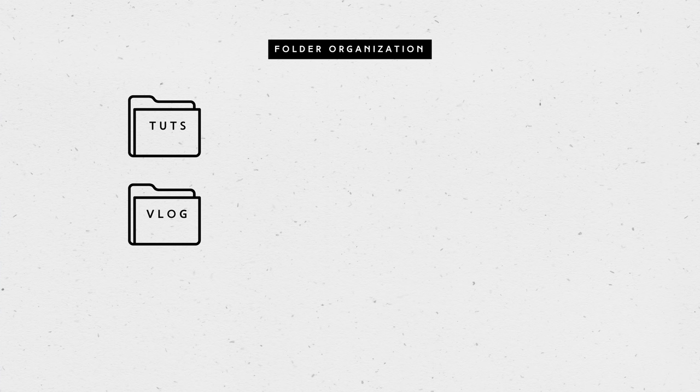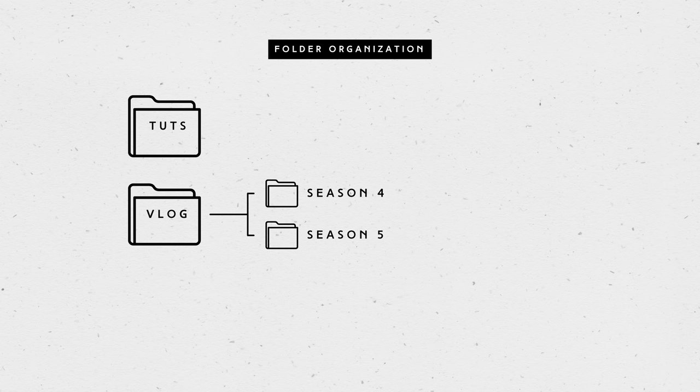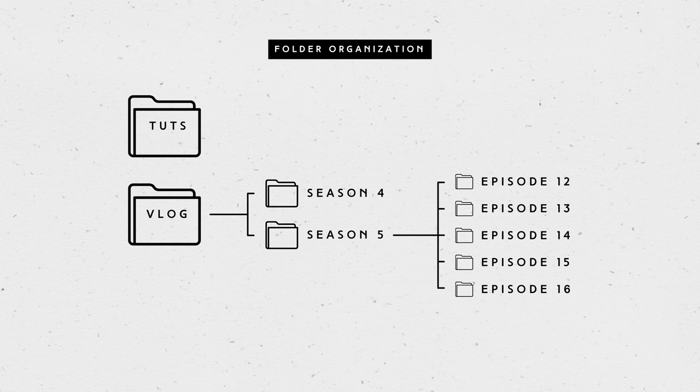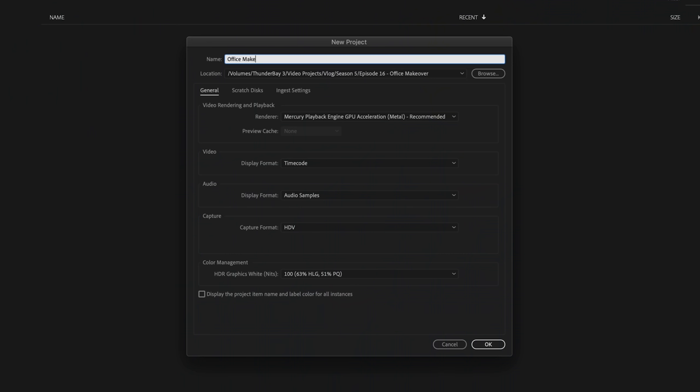I organize all my projects based on the format they're in — so I have a folder for tutorials, a folder for the vlog, and within the vlog there's a bunch of folders per season. This is season five of the vlog. We're going to put this in the season five folder, and within that folder every episode has its own folder. So this will be 'episode 16 office makeover,' and then all of the files go in there: my titles, my reference videos, my auto-save files. Let's title the project 'office makeover vlog.'